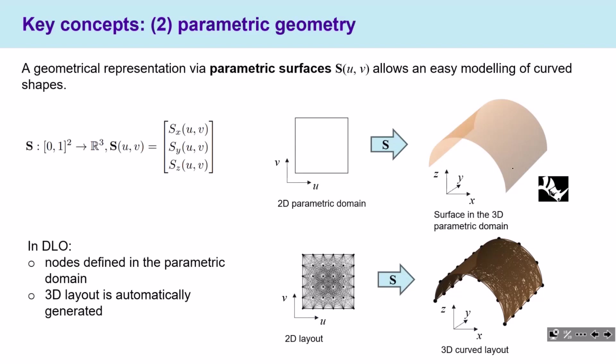A parametric surface is a three-dimensional curved surface in 3D space that corresponds via a mathematical function to a two-dimensional parametric domain. These functions can be written manually in the code, but the idea is to have communication with modeling software such as Rhinoceros, where parametric geometry is typically adopted. The approach is to define nodes and the initial layout in the parametric domain, and the mapping function automatically produces a three-dimensional curved layout on the curved surface.